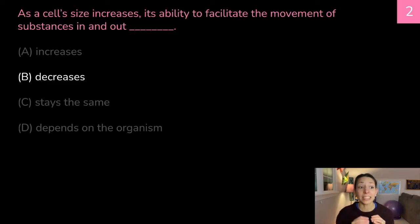Correct answer is B, decreases. In general, as a cell grows, its volume increases at a faster rate than its surface area, which decreases the surface area to volume ratio. So when we have comparatively smaller surface area to the volume of all the things that are going on in the cell, it's going to be more difficult for the cell to move substances in and out at a rate that it requires.